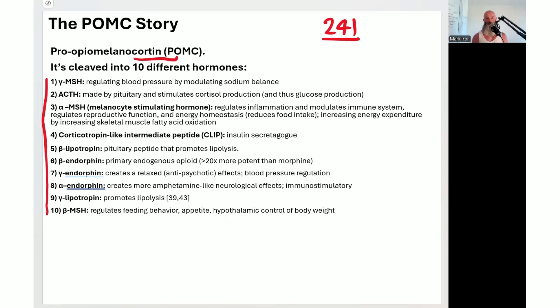So check these out. We've got gamma MSH, which helps regulate blood pressure through modulating sodium balance. It also works like an adaptogen. Have you heard of ashwagandha working as an adaptogen? This one here, if cortisol is too high it brings it back down, if it's too low it brings it back up to healthy levels. And we've also got alpha melanocyte-stimulating hormones to help regulate inflammation.